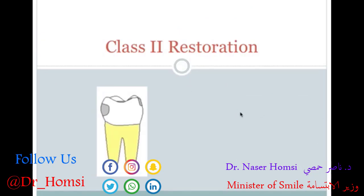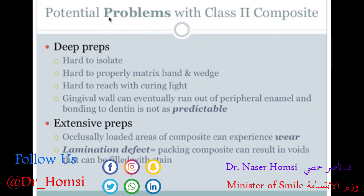Class 2 restorations incorporate the proximal surfaces of posterior teeth — not only the occlusal surface, but also the mesial, distal, or both surfaces. Potential problems with class 2 composite include: deep preparations going below the gum line can be very hard to isolate, which is critical for composite since saliva or blood infiltrating the area makes it hard to cure and introduces voids.